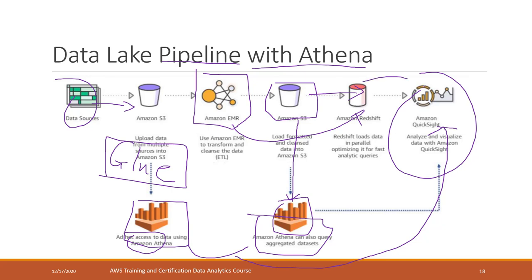Once you load data into Redshift, you can also connect Redshift to QuickSight directly to visually explore the data. After this class, I really want you to know that there is no single way to analyze big data — there are multiple ways. Choose the approach that fits your budget, timeline, and data type. You can use a single database, a cluster of databases, or a data warehouse. For unstructured data, consider using a data lake with Athena or EMR, and no matter which storage you use, QuickSight can always visualize your data.